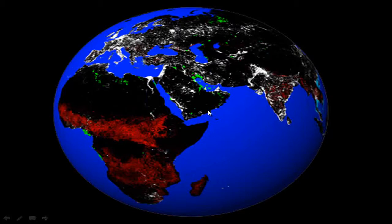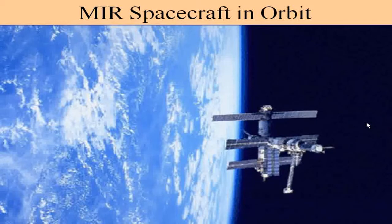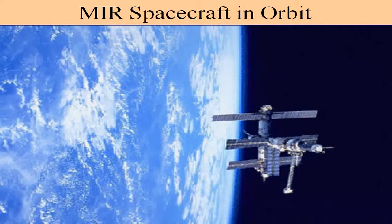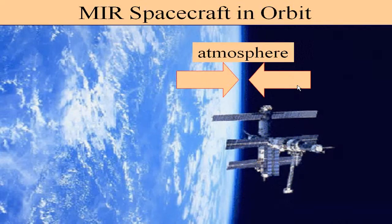Here's a picture from space showing populated areas and light coming from around the world. Here's a picture of the Mir spacecraft in orbit around the Earth. Most interesting in this photograph is the picture of the Earth — you see the curvature of the Earth and the Earth's atmosphere right here. It's just this thin blue line — that's Earth's atmosphere. You get a picture of how thin that atmosphere really is.